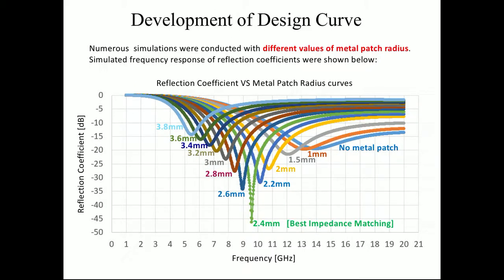Development of the design curve: Numerous simulations were conducted with different values of metal patch radius. Simulation frequency response of the reflection coefficients were shown below. As you see, we have our gigahertz and our dB. As you see in the graph, from zero metal patch to 3.8 millimeters, 2.4 is the best impedance matching.